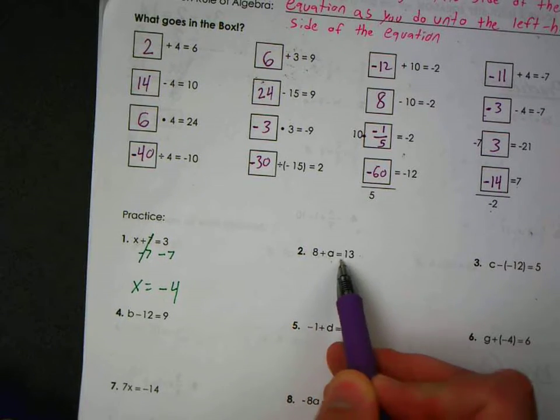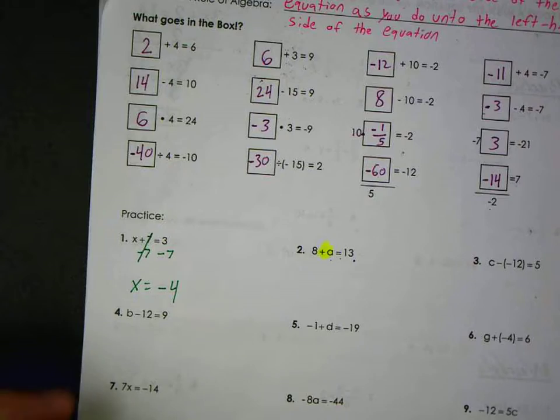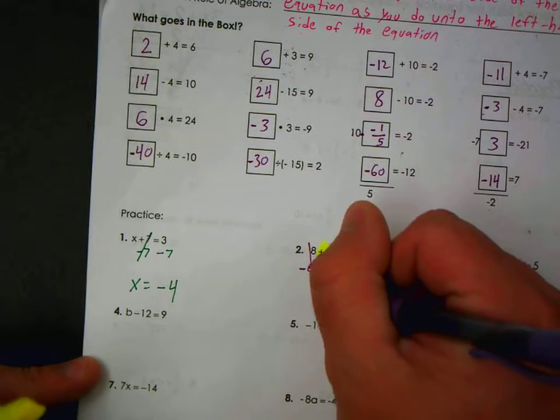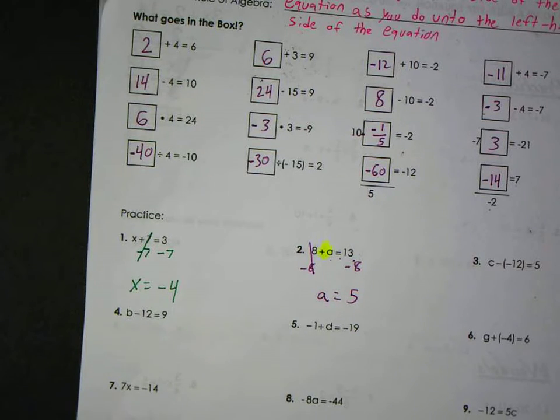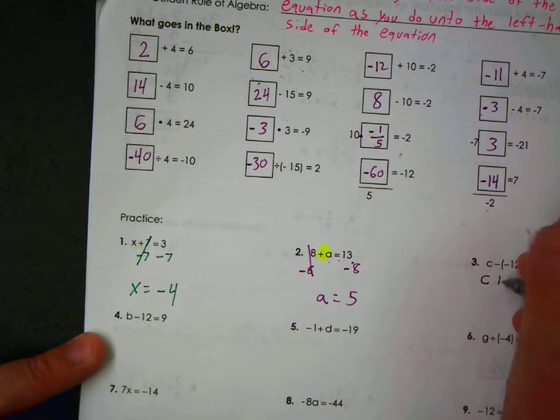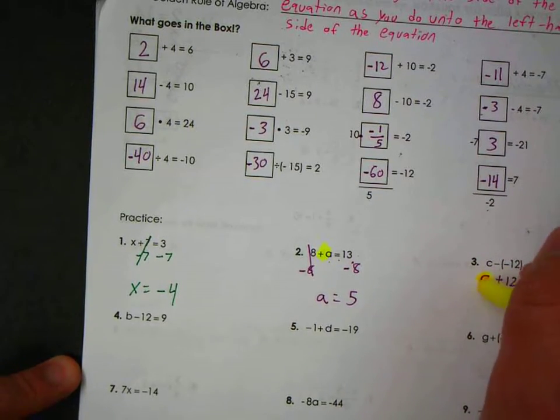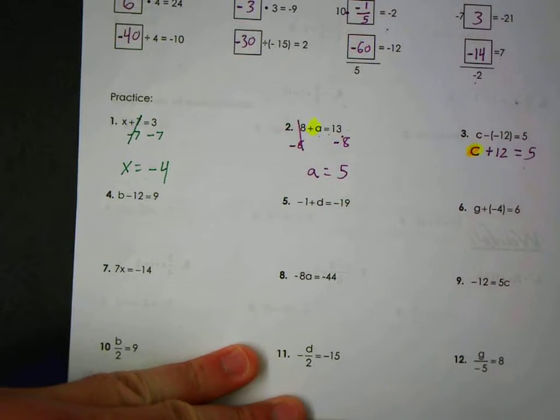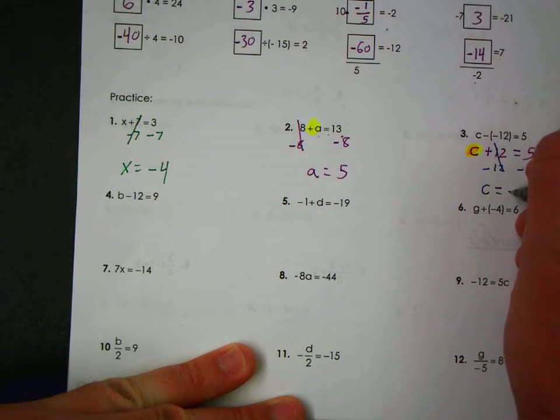Here, eight plus a equals thirteen. How do I get the variable by itself? Subtract eight. Cancel those. Whatever you do to the left, you do to the right. So a is thirteen minus eight, which is five. Now this is confusing, c minus a negative. I would encourage you, anytime you see two negatives together, just change it to a plus. To me that is way less confusing. That means the same thing. So I'm trying to get the c by itself now.